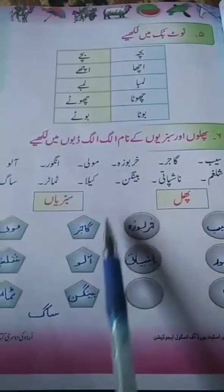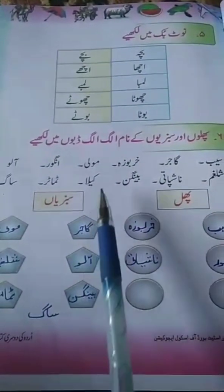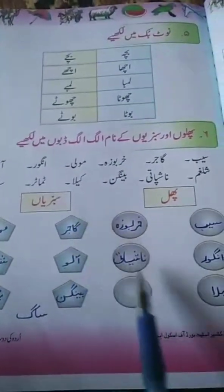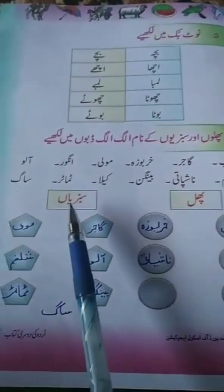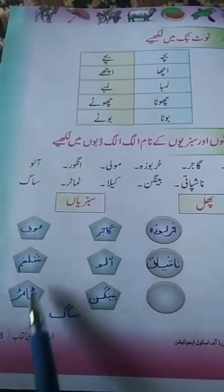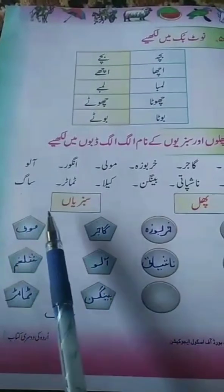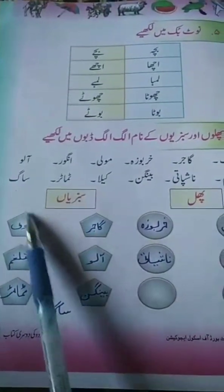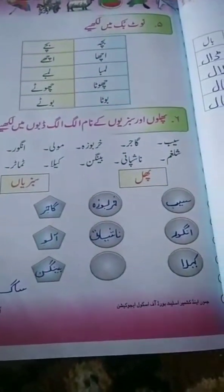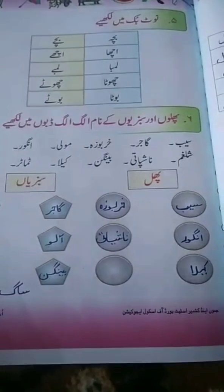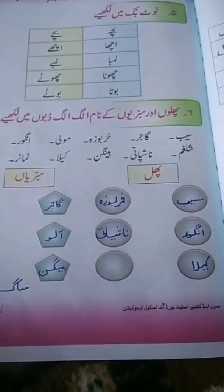Bangan (eggplant). 6. Kela (banana). 7. Tomato. Sabz (green). Saka. Sabz. Yad (remember). Shukriya (thank you).